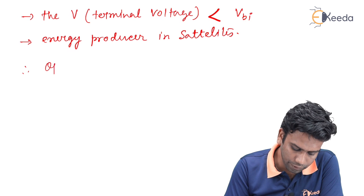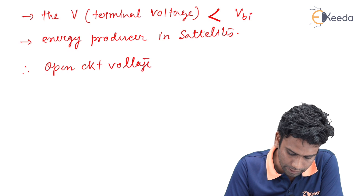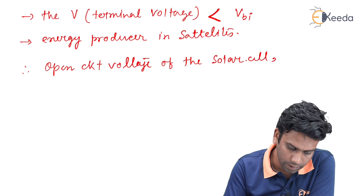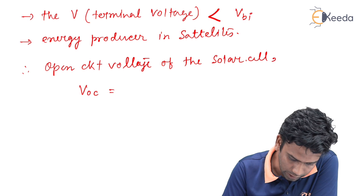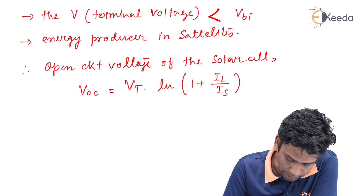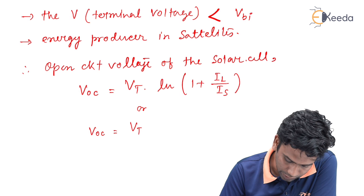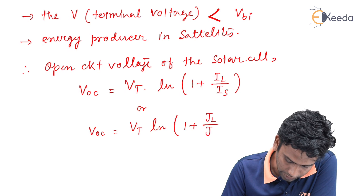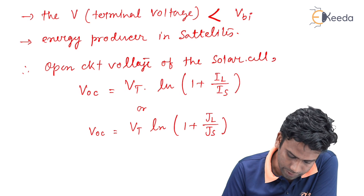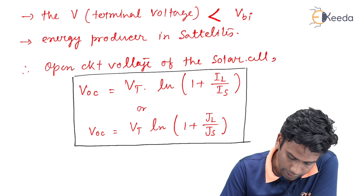If we want to write the open circuit voltage of the solar cell, it will be denoted as V_OC. V_OC equals V_T times ln(1 + I_L / I_S), or equivalently V_OC equals V_T times ln(1 + J_L / J_S). This is the main equation for the open circuit voltage of the solar cell.